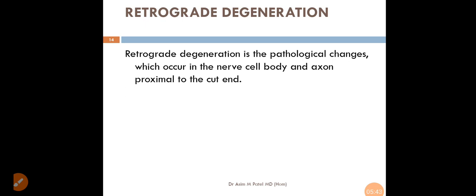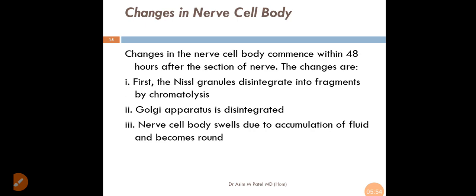The next one is about retrograde degeneration. Retrograde degeneration is the pathological changes which occur in the nerve cell body and axon proximal to the cut end. Here the changes occur in the nerve cell body as well as in the axon.